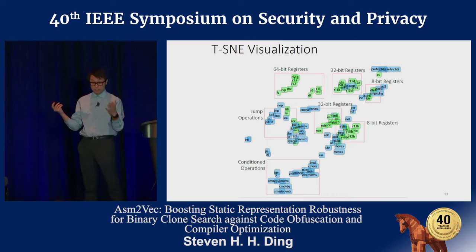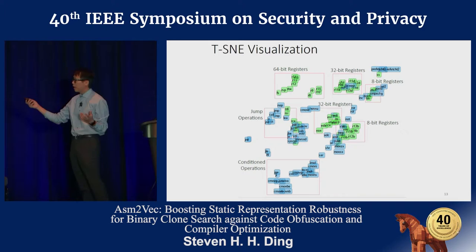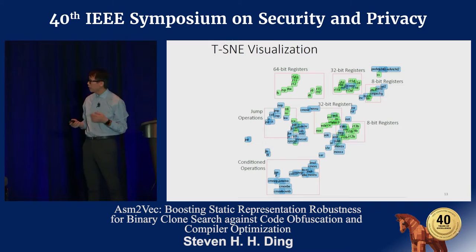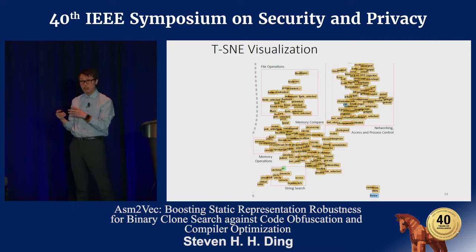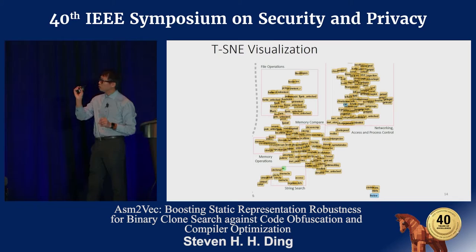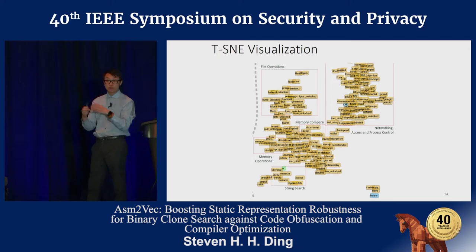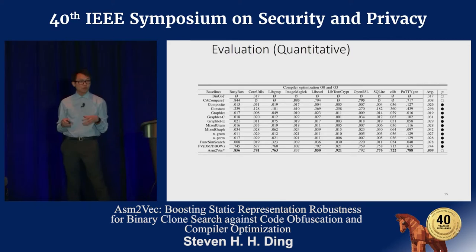This model works pretty well on assembly language. Visualizing the relationships among assembly tokens in vector space is quite interesting. We can see that 64-bit registers group together by bit length as they are similar in context. Arithmetic operations are grouped together, and conditional operations cluster together. Looking at libc function calls inside the code, file operations are grouped together, and networking and access control functions are very similar to each other. Memory operations tend to group together as well, as do string search functions.